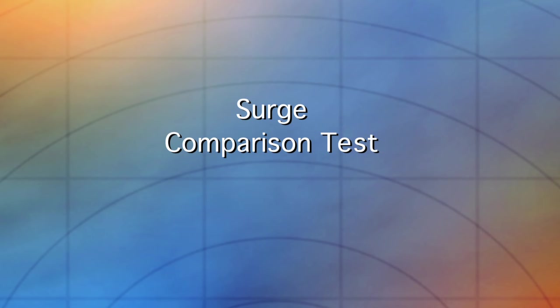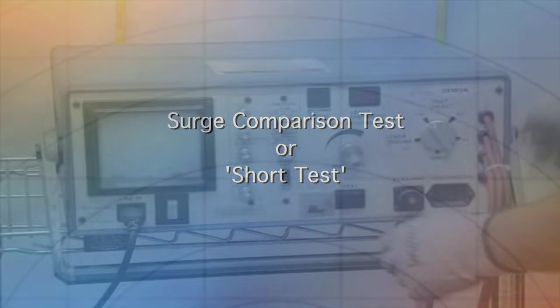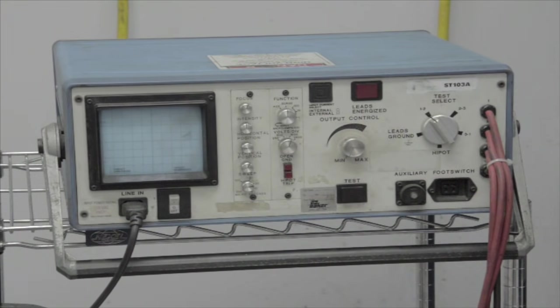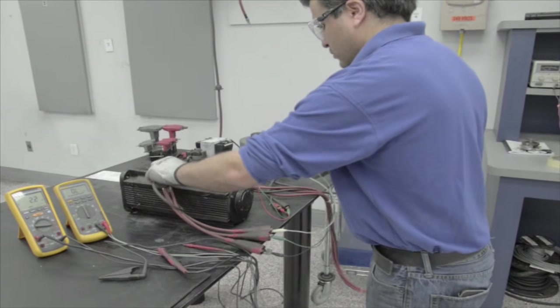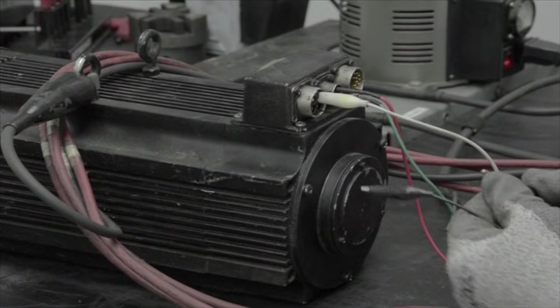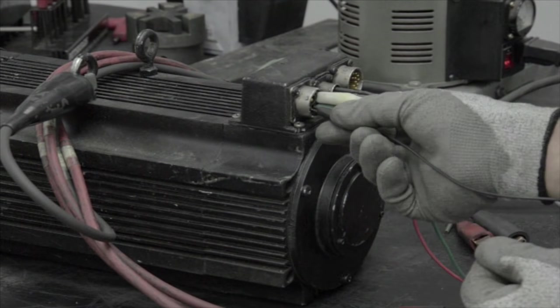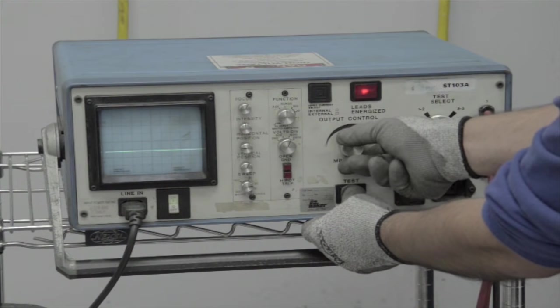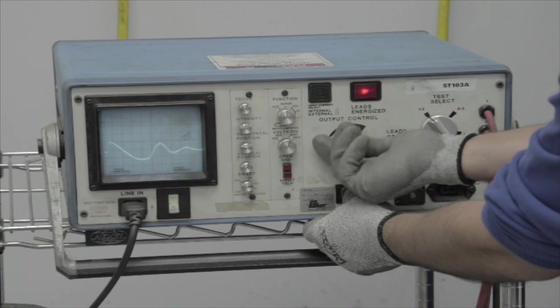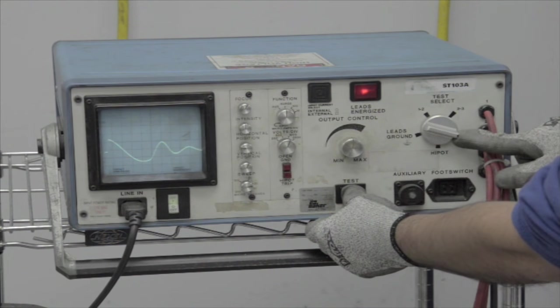The next step is for the technician to perform a surge comparison test or short test. He is using a surge tester to verify whether or not the stator will need a rewind. First connecting the ground to the motor and then connecting three leads to each phase of the motor. The surge test checks the strength of insulation and for any shorts, turn-to-turn, layer-to-layer or phase-to-phase. As you can see on the screen of the surge tester, as the high voltage is applied, the readout from phase one to phase two is perfect, phase two to phase three is perfect and phase three to phase one is also perfect.